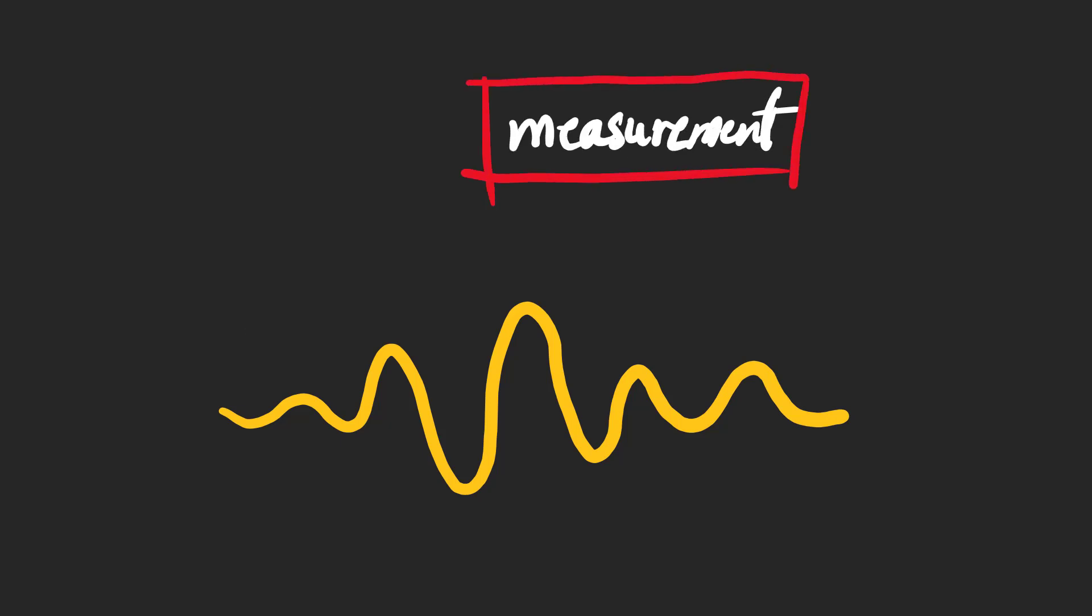If we perform a measurement on the particle, for example, if we measure its position, the wave function collapses to a spike showing its measured position.